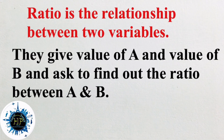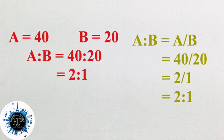Ratio means the relation between two variables. The question will be in this format: they will give value of A and value of B and ask you to find out the ratio between A and B. We can assume A is equal to 40 and B is equal to 20. So A is to B is equal to 40 is to 20. Dividing by 20, it will be 2 is to 1. In other format, A is to B equals A by B, that means 40 by 20, which gives 2 by 1, i.e., 2 is to 1. This is the basic concept.